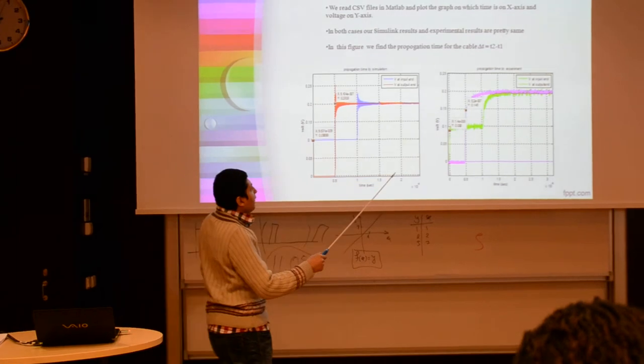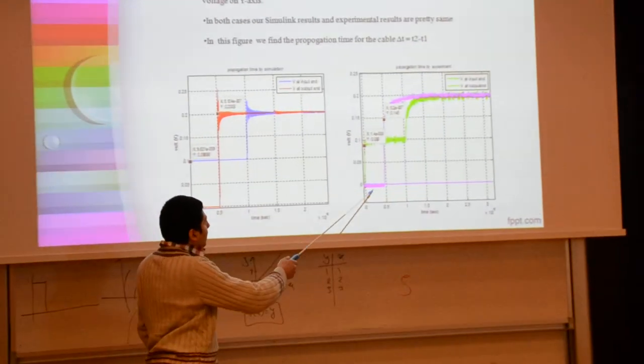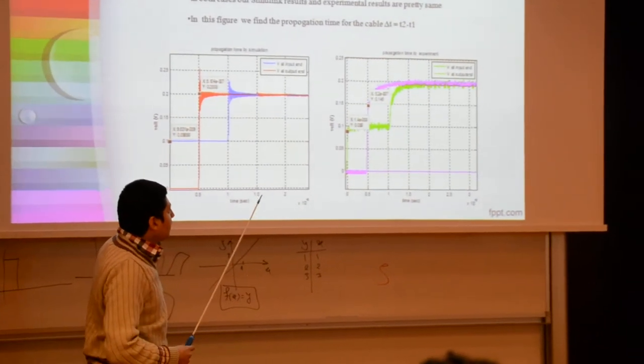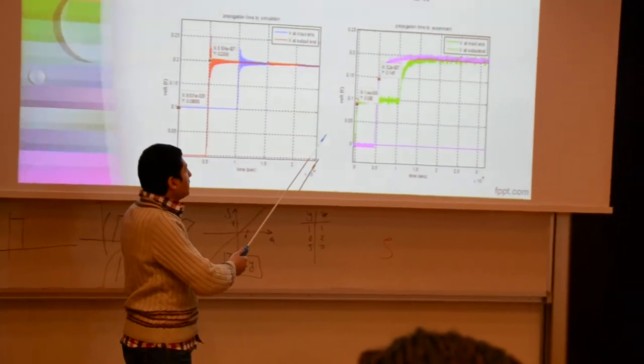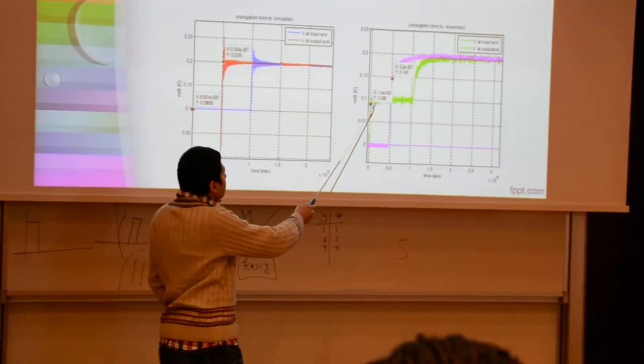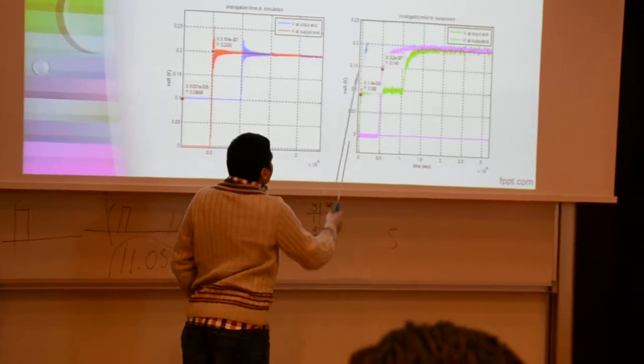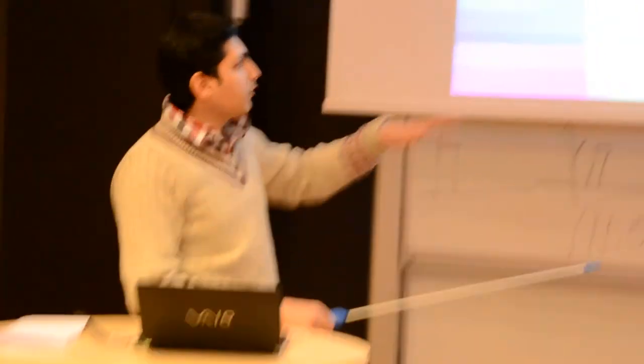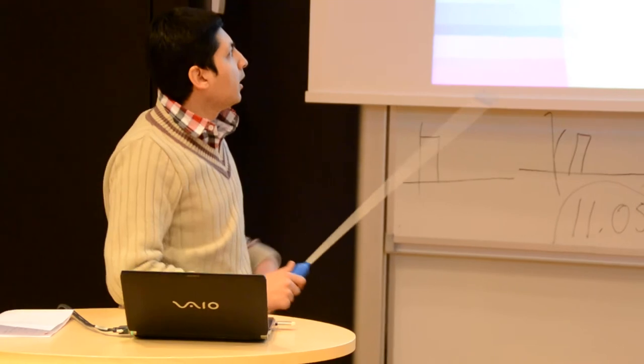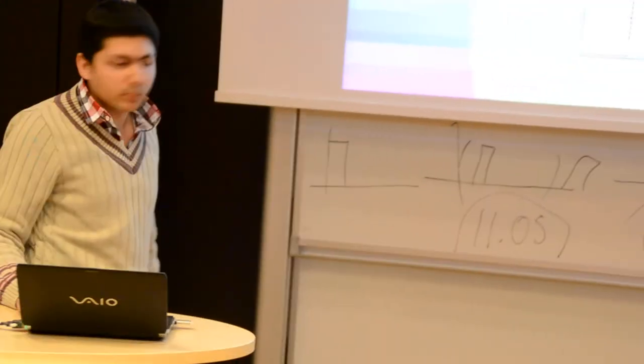And in this case we have input end and output end for the experiment and the Simulink result. Here again we have 0.2 volts. It is similar, it is 0.2 volts. And to prove it, to be sure, we did the calculation for the verification.